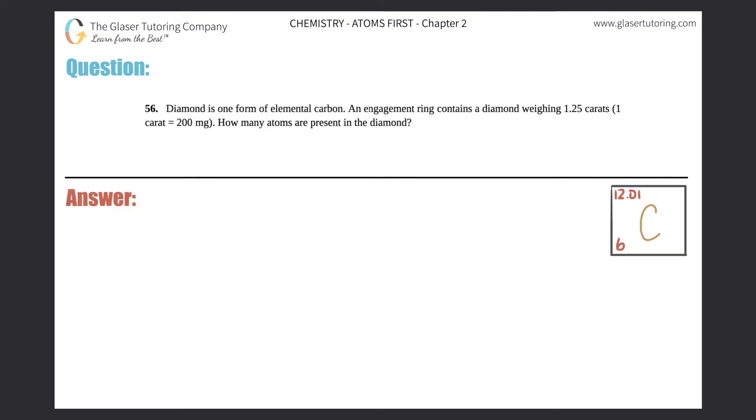Number 56: Diamond is one form of elemental carbon. An engagement ring contains a diamond weighing 1.25 carats, and they're telling us that one carat equals 200 milligrams. How many atoms are present in the diamond?